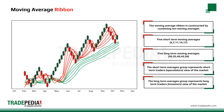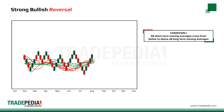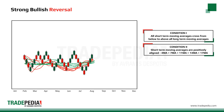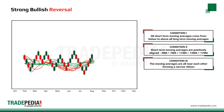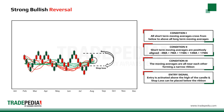A strong bullish reversal signal is given when the following conditions are met. Condition one: all short-term moving averages cross from below to above all long-term moving averages. Condition two: short-term moving averages are positively aligned — that is, the 4 period average is above the 7th, the 7th above the 11th, the 11th above the 14th, and so on. Condition three: the moving averages are all near each other, forming a narrow ribbon. The entry is activated above the high of the candle that generated the signal, and a stop-loss can be placed below the moving average ribbon.